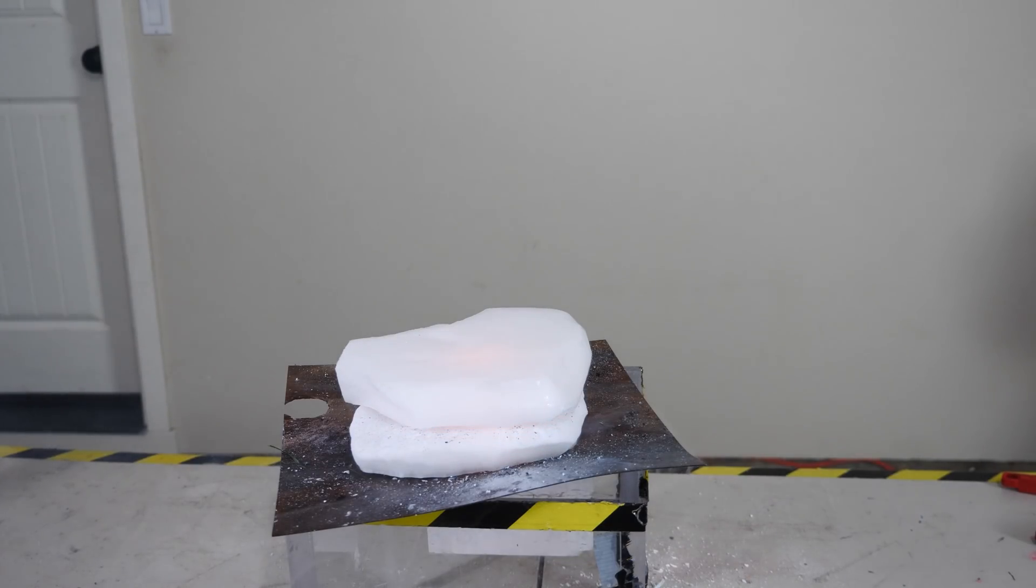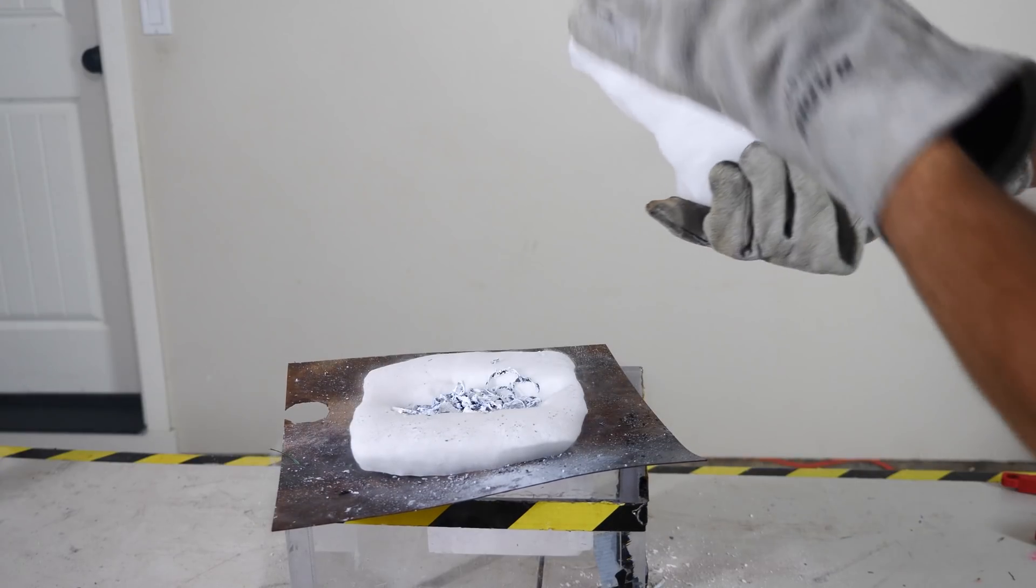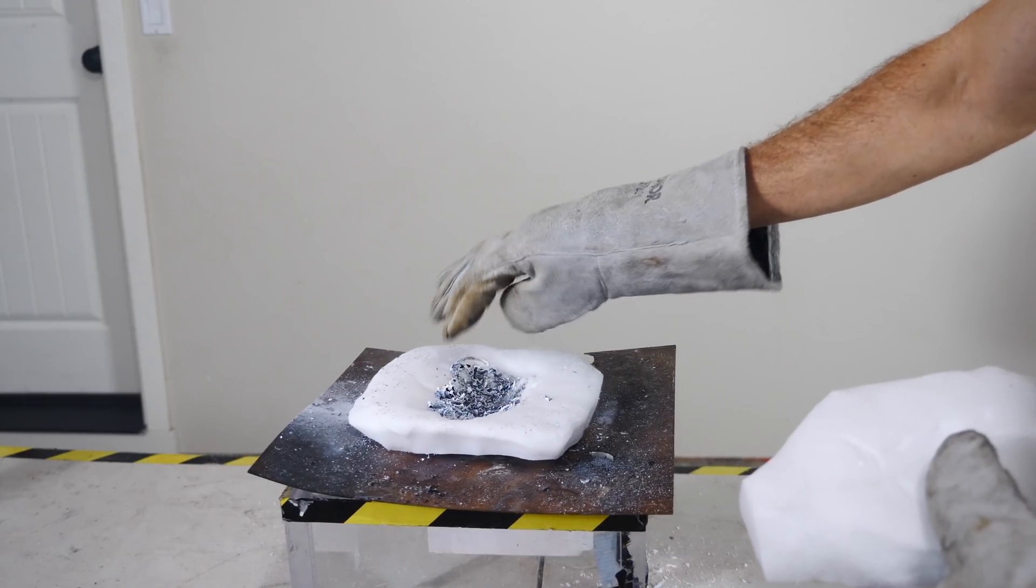So you can see we did this in a lit room and that's how bright it got. So the lighting auto adjust completely made everything else look dark because of how bright it got. It just completely dwarfed the light in the room. So you can see what's left is magnesium oxide and elemental carbon.